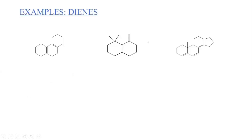Now let's talk about the diene. For the diene, we are going to use this formula to help us remember the Woodward-Fisher rule. P is the parent value, AR is the ring residue, E is the exocyclic double bond, and D is the double bond extension. This mnemonic will help you remember every detail you need to account for while doing your calculations.